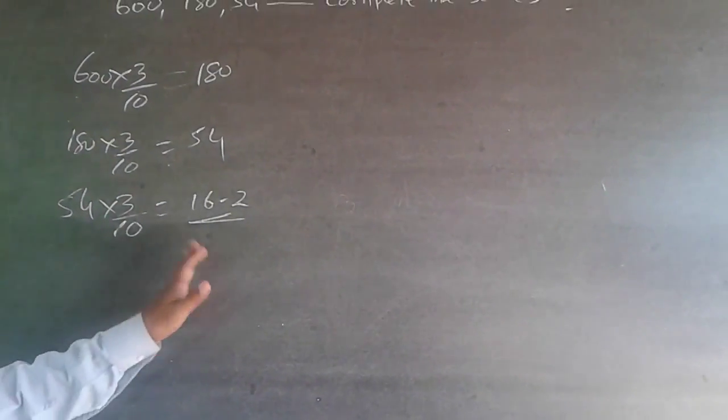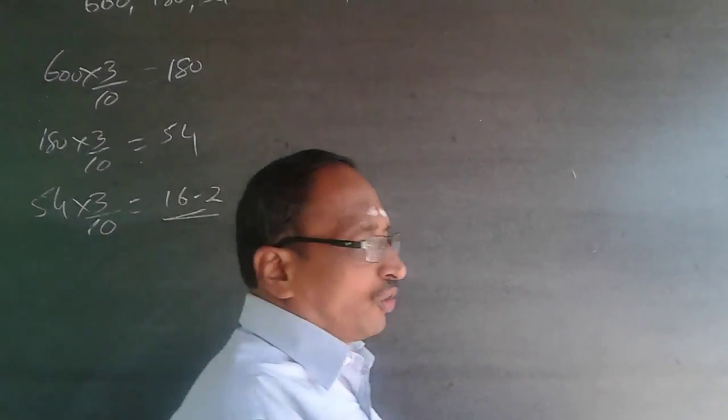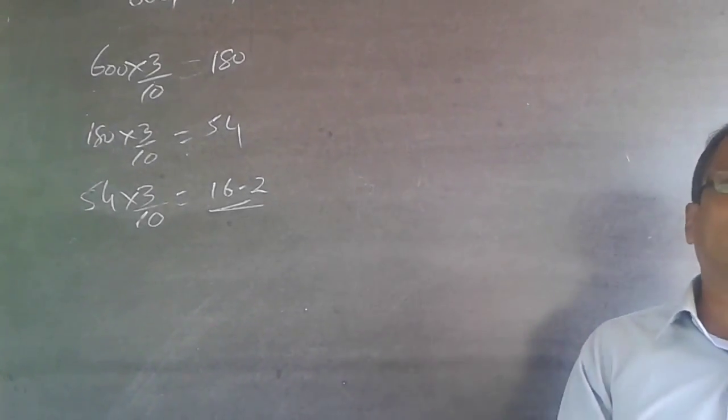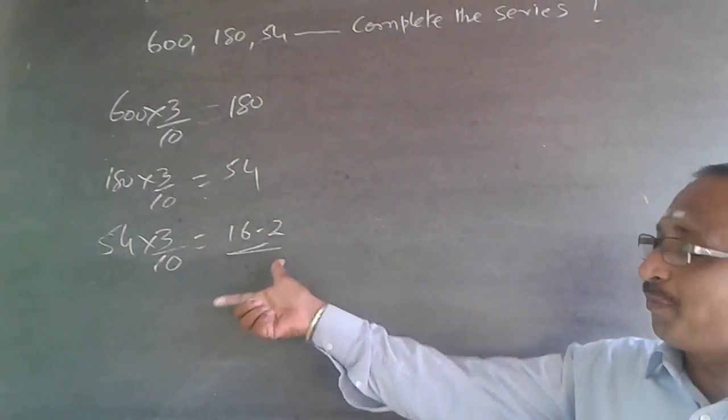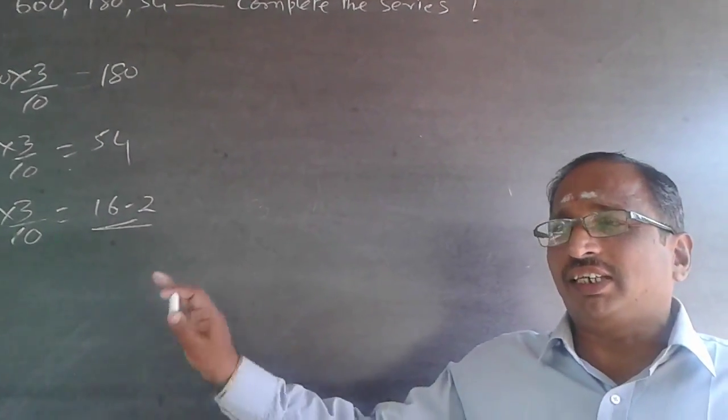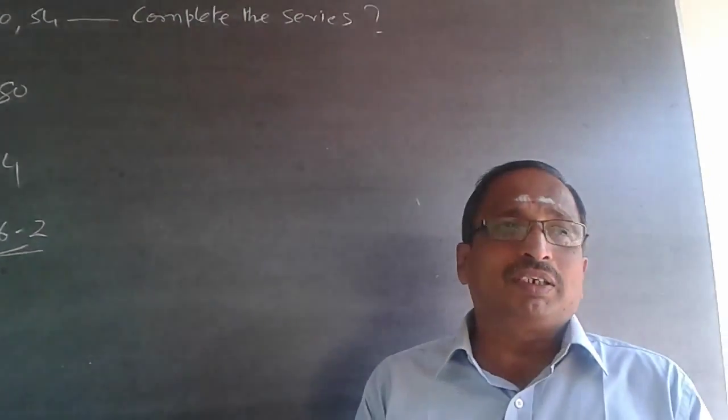In case the option does not have 16.2, you will have to choose 16. If 16.2 is there, the answer is 16.2. If 16 is there and other numbers are round numbers, then choose 16. Subscribe to my channel, I will be adding questions here.